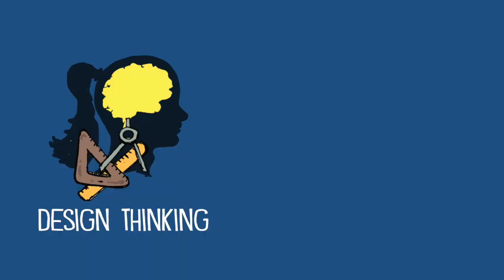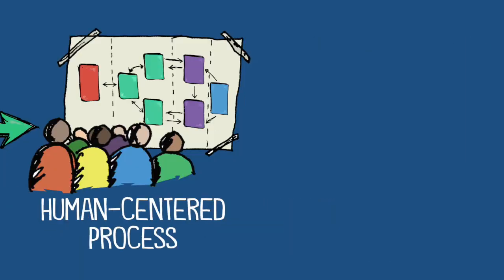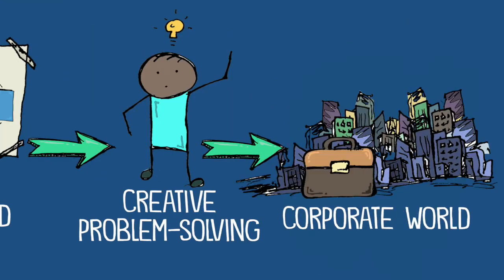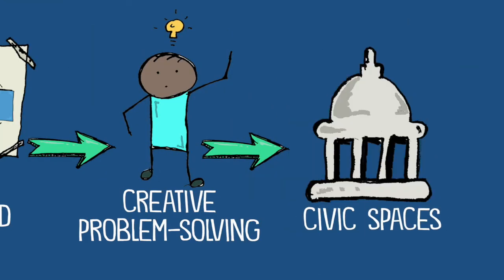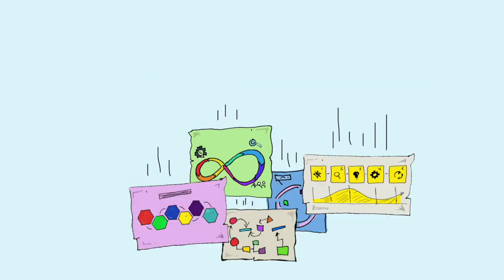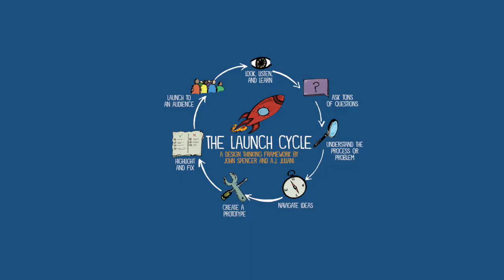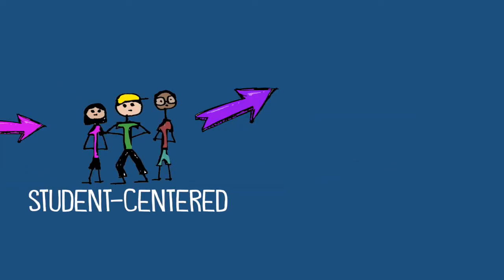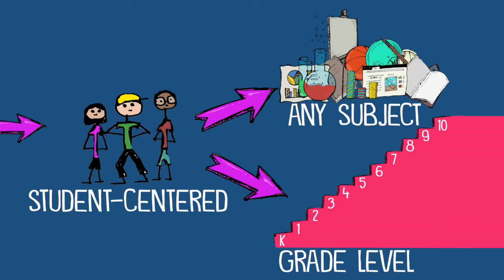Now, design thinking is a human-centered approach to creative problem solving. It's used in the arts, in engineering, in the corporate world, and in social and civic spaces. While there are many design thinking models, the launch cycle is a student-centered framework that you can use in any subject with any grade level.